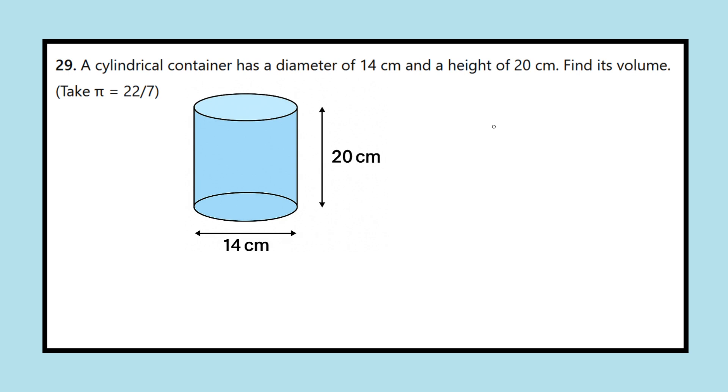Question 29: A cylindrical container has a diameter of 14 centimeters and a height of 20 centimeters. Find its volume. Take pi equals 22 sevenths.